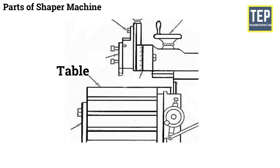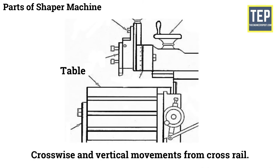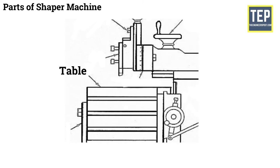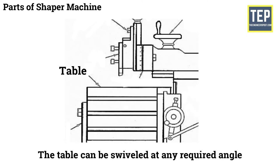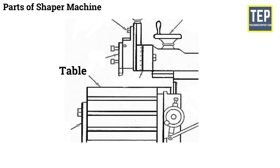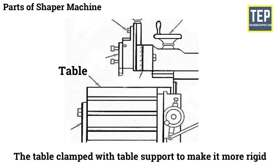The table is bolted to the saddle and receives crosswise and vertical movements from cross rail. T-bolts are used for clamping on top and sides. The table can be swiveled at any required angle. In heavier type shapers the table is clamped with table support to make it more rigid.